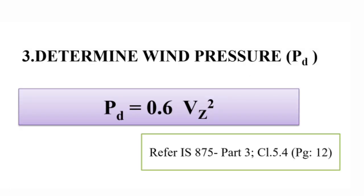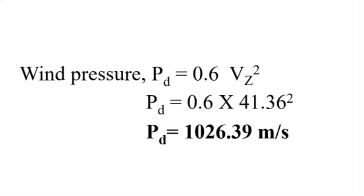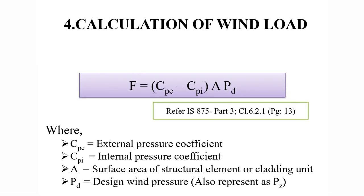Design wind pressure = 0.6 × VZ². Substituting VZ = 41.36 m/s: design wind pressure = 0.6 × 41.36² = 1026.39 N/m². This PD value will be used in the wind load equation. From Clause 6.2.1, wind load on roof: F = (CPE minus CPI) × A × PD.